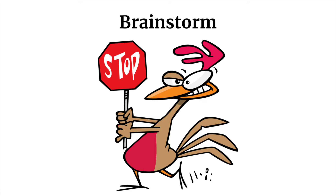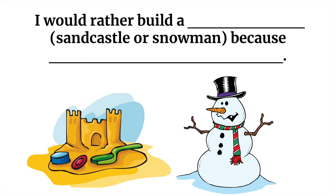Okay, do you have your list? Let's continue. I would rather build a blank — that's where you put either a sandcastle or a snowman, whichever you chose in the introduction. Because blank — and you're going to fill in the second blank with one of the reasons from your list. I would rather build a blank because blank.